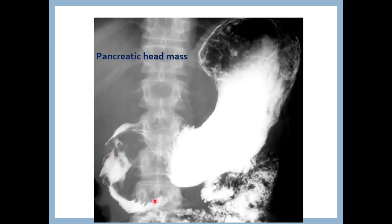On barium meal follow-through: the small bowel is filled with contrast. In the region of the pancreas, the duodenal loop is widened with irregularly invaded mucosa and irregular outlines — picture of pancreatic head mass, as the pancreatic head lies in this region. Full comment: barium meal follow-through showing widening and dilatation of the duodenal loop with irregular outlines of the mucosa, picture of pancreatic head mass.